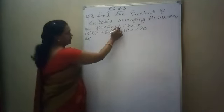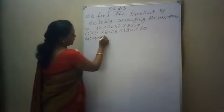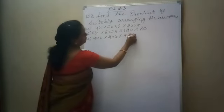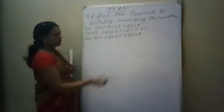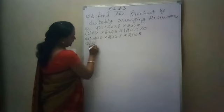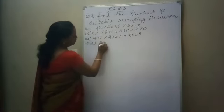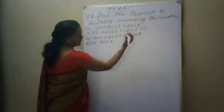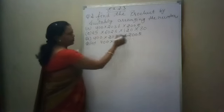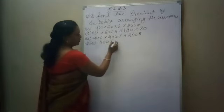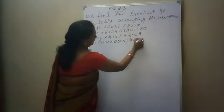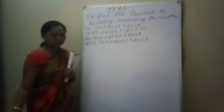In the A part there are 3 numbers: 400 multiplied by 2037, then multiplied by 2005. When we are going to do multiplication of 3 numbers, we will arrange a group of 2 numbers — first and last. Here you are free; you can make the group of first and second or the group of first and last. So we take 400 multiplied by 2005, multiplied by 2037.